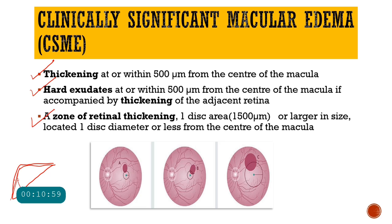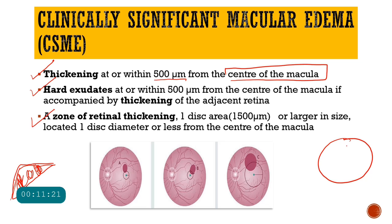Criteria one for CSME: there should be thickening of the retina at or within 500 microns from the center of the macula. Consider the fovea as center and draw a circle of 500 microns centered on the fovea — if any part of the retinal thickening is present within this 500-micrometer circle, it qualifies as clinically significant macular edema.